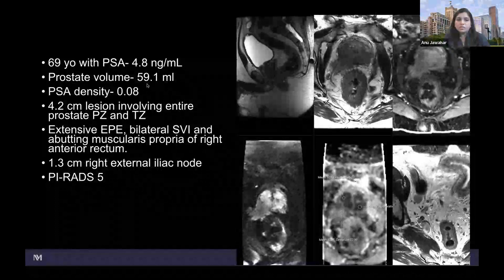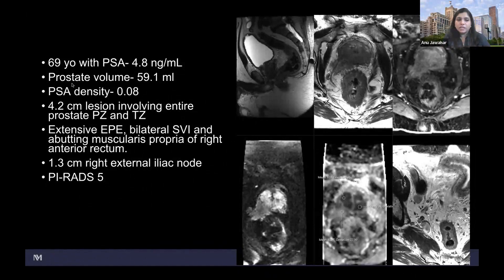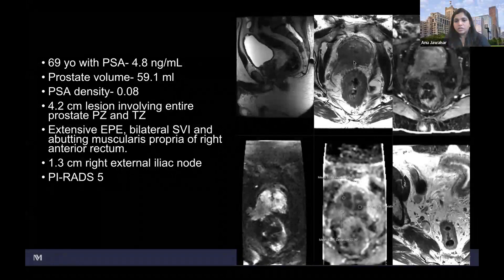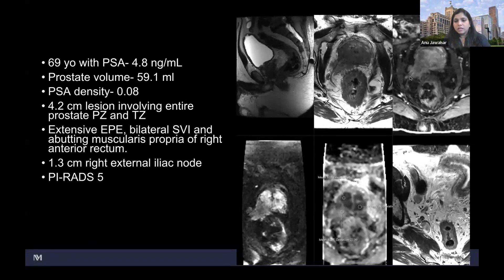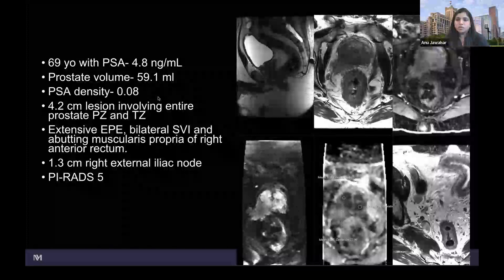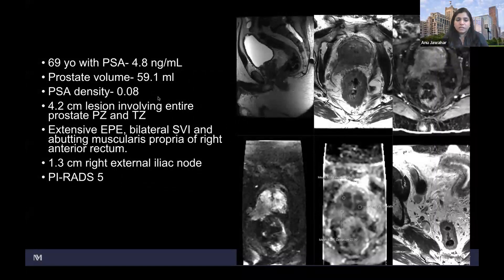This patient's PSA level is just marginally increased at 4.8, the volume is not too impressive, and the PSA density is only 0.08. As you remember, more than 0.15 is when we think there's high suspicion, but you can see here it's a large volume tumor — involvement of the right and left peripheral zone, extra-prostatic extension, involvement of the neurovascular bundle, all enhancing. But it's PSA density 0.08. Always take it with a pinch of salt and look at the images rather than just by the numbers.